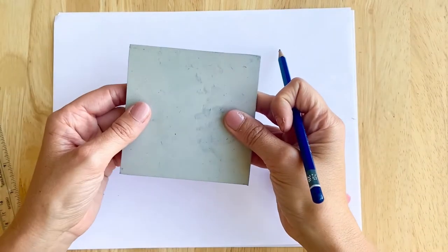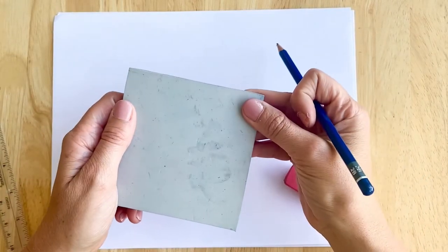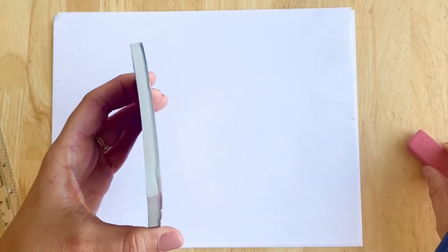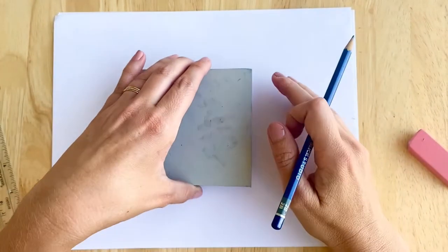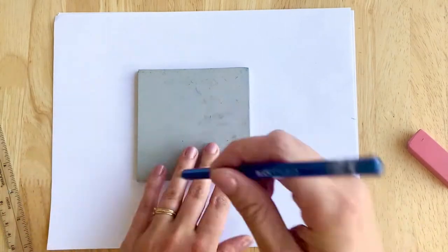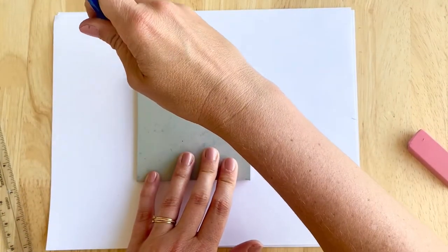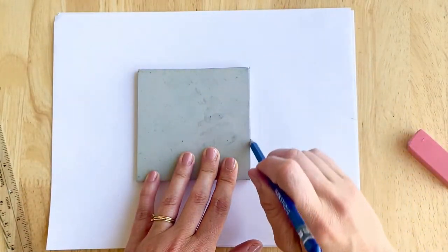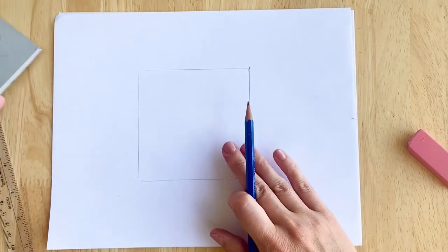So to get started, I have some soft cut linoleum. This stuff is often thick enough to carve on both sides so I'm going to reuse this block that I have. Any size will do but make sure you trace it onto your paper when you're designing so you know exactly how big to make your design.